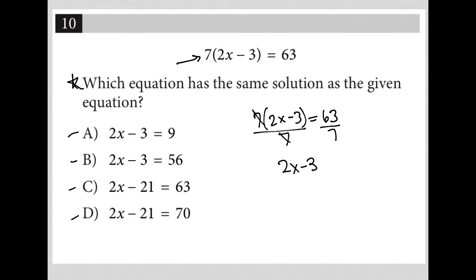Starting with that approach, I'd have 2x minus 3 equals 63 divided by 7, which is 9, making choice A the correct answer.